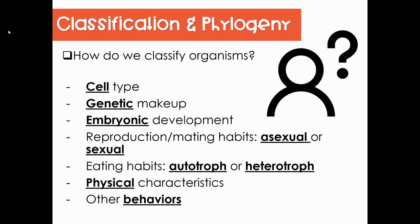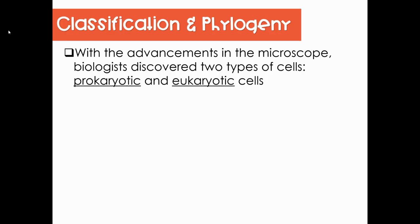There are multiple ways that we can classify organisms. We can classify organisms by cell type — are they prokaryotic or eukaryotic cells? We can use amino acid sequences and protein sequences to determine genetic makeup and whether organisms are related. We can use embryonic development, the way they reproduce (asexually or sexually), how they eat — autotrophs make their own food, heterotrophs consume their food — and physical characteristics and behaviors.